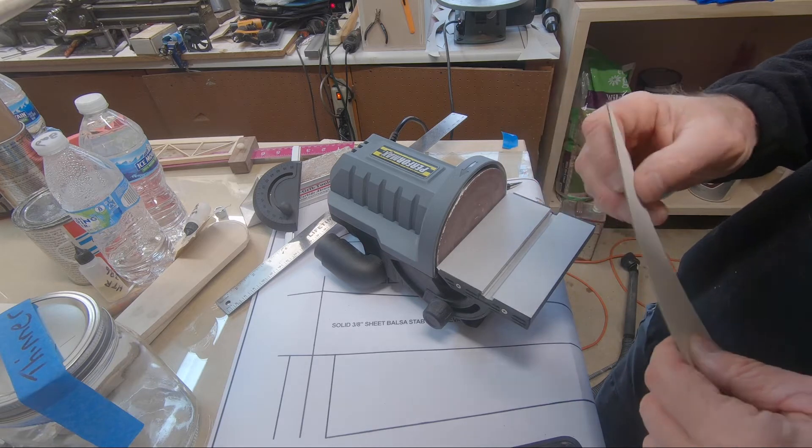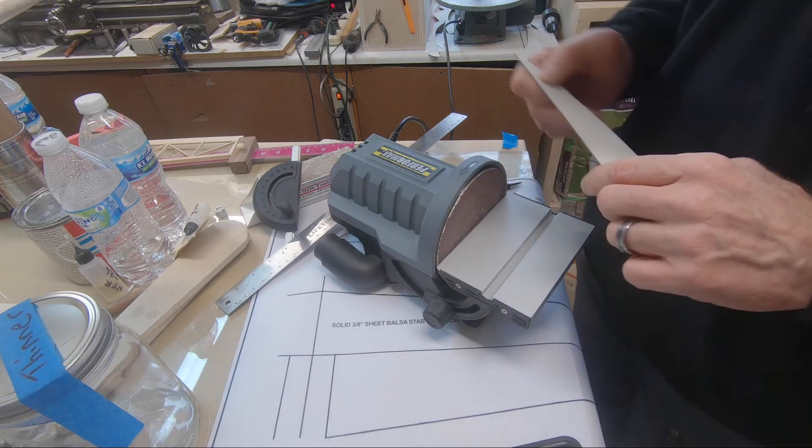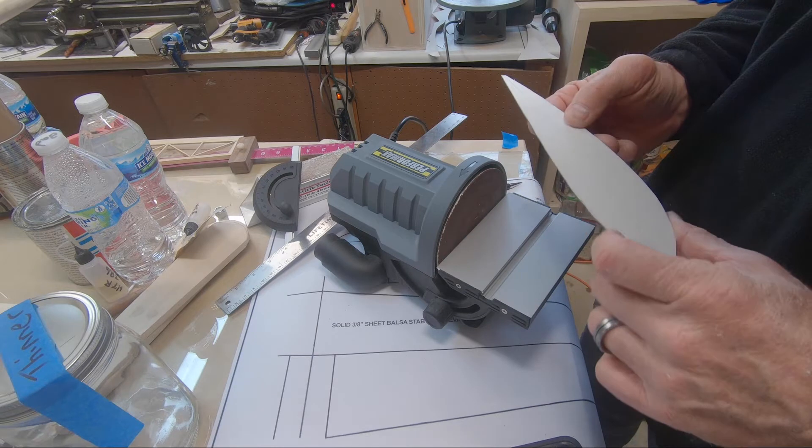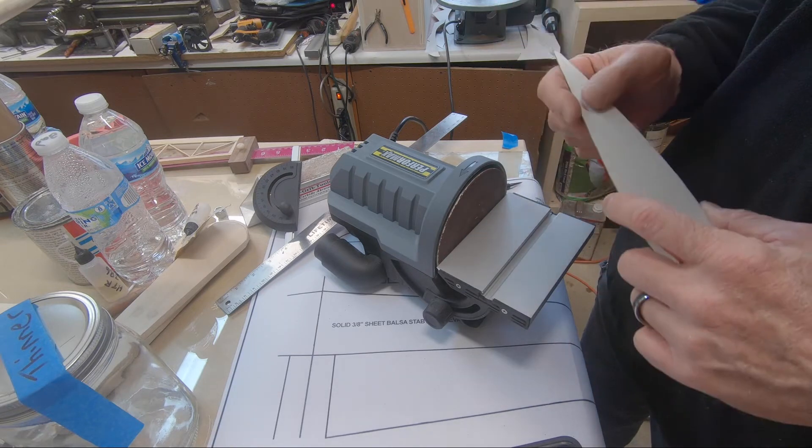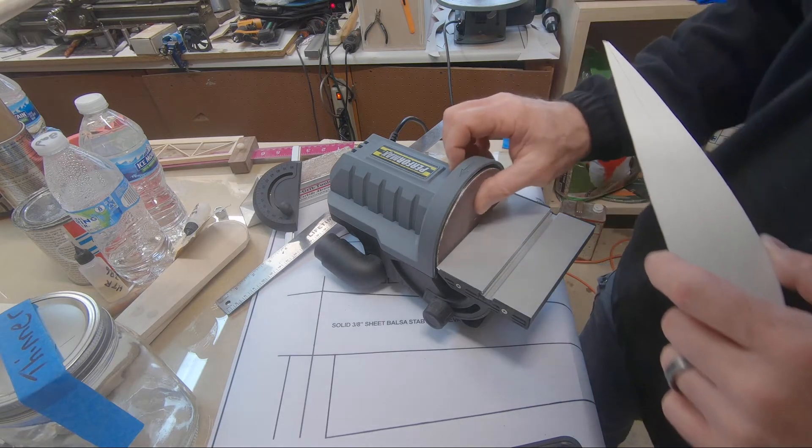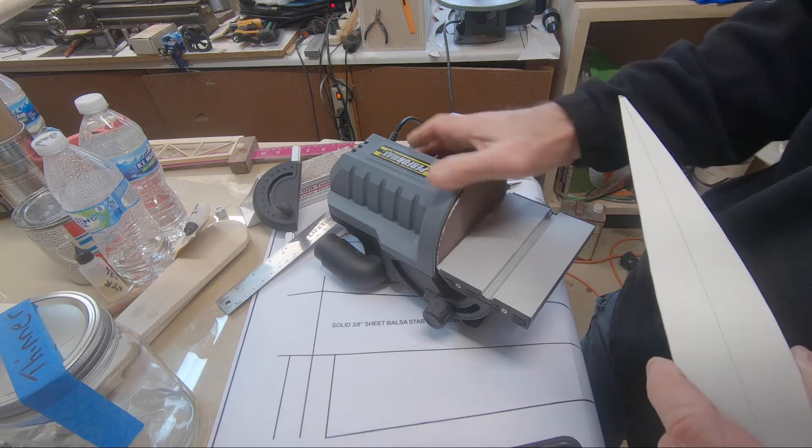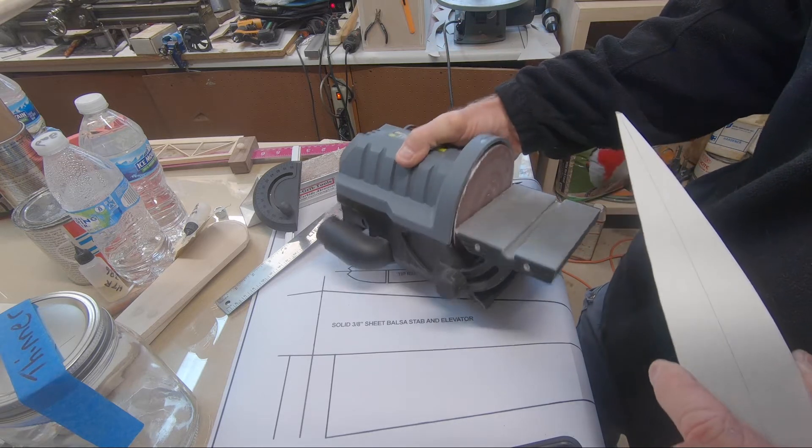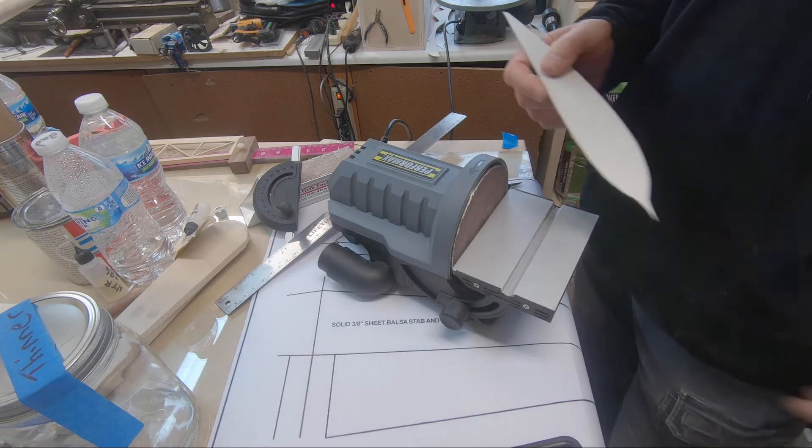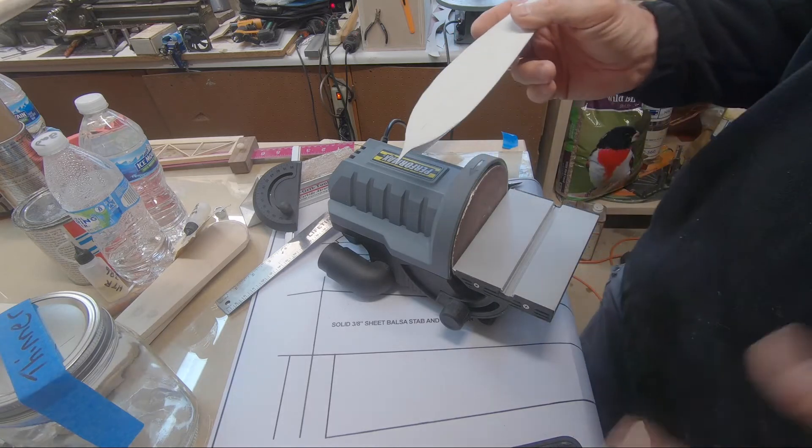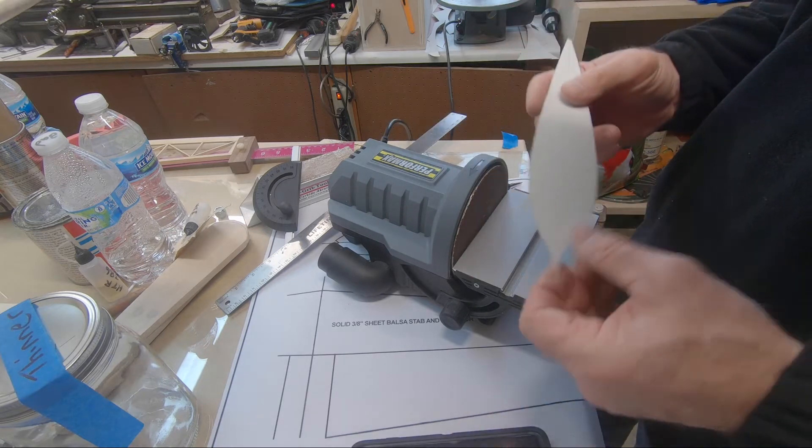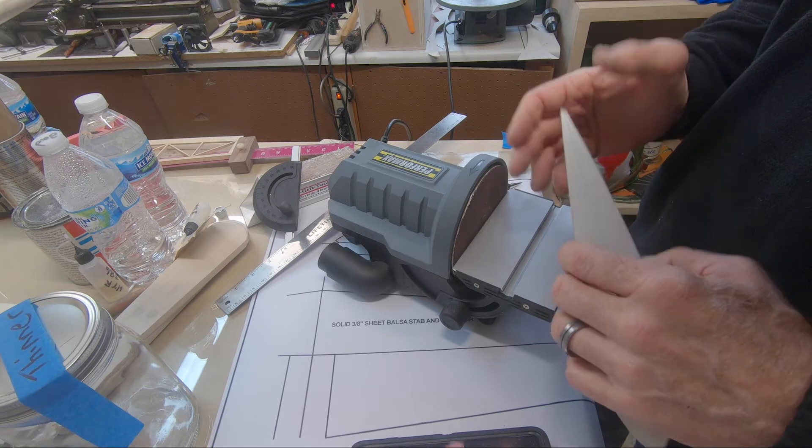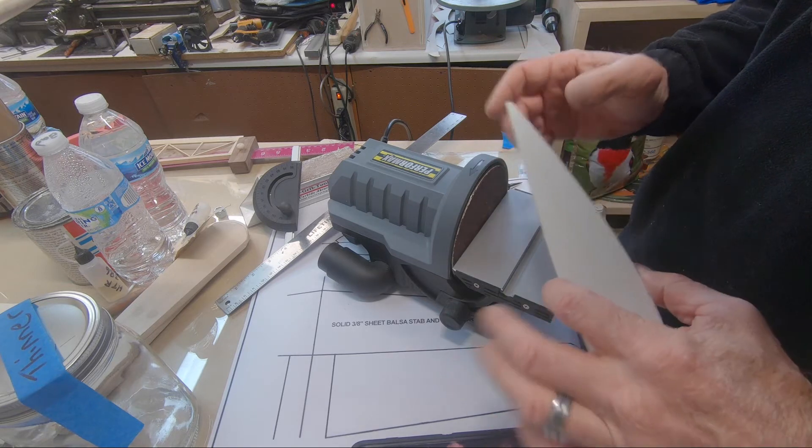So this is a cheap little sander that I got at Menards. It's a DC motor, plugs into AC, but I'm pretty sure it's a DC motor. If you're into heavy woodworking, it's probably not what you want. It's perfect for balsa wood and little stuff.